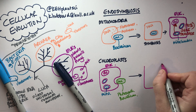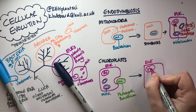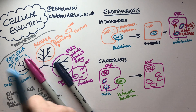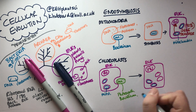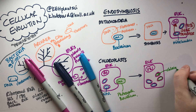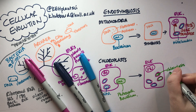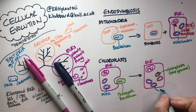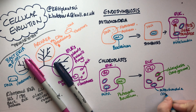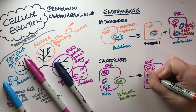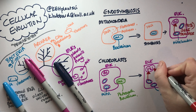Again we have that symbiosis step that gave rise to this complex eukaryotic cell. It's got its own nucleus with a DNA genome, it's got mitochondria from that first endosymbiosis, and then it's got chloroplasts from that second endosymbiosis. The chloroplasts again have their own genome and their own ribosomes, but they are now classed as organelles rather than symbionts.